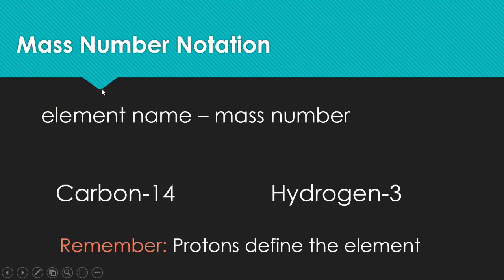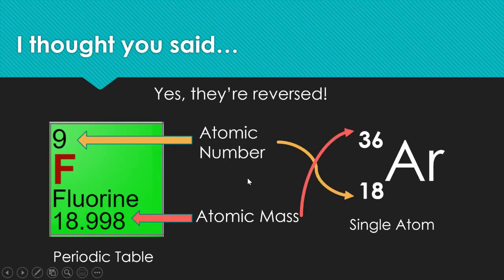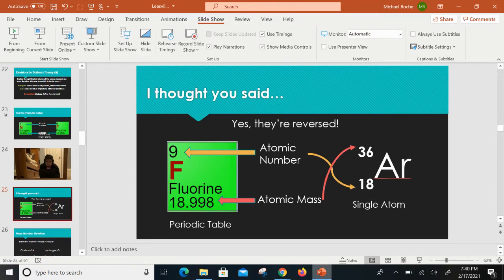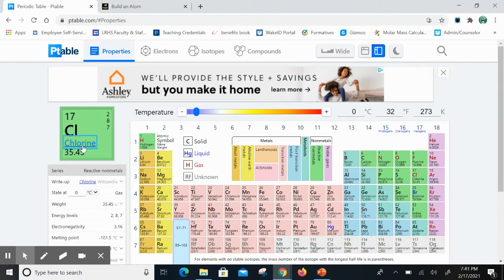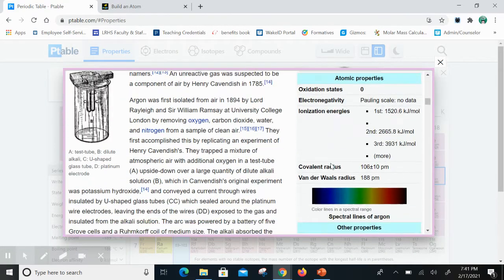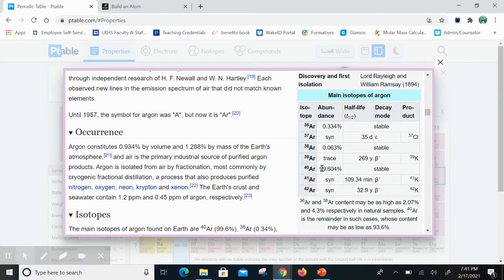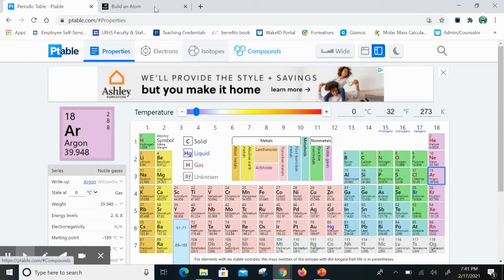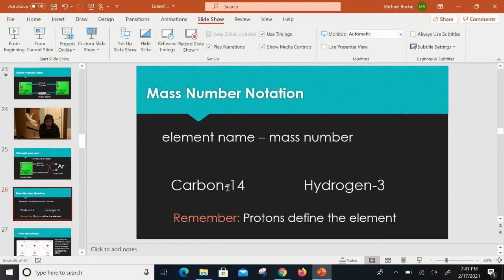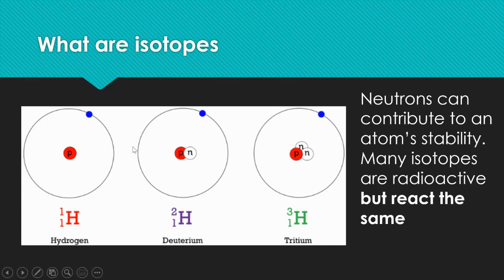There's also mass number notation: you write the element name, a dash, and then the mass number — for example, Argon-40. This works because if you say 'argon,' you already know there are 18 protons by definition. Argon comes in many isotopes with different numbers of neutrons, but they all have 18 protons. Similarly, saying 'carbon' already tells you there are six protons, so just adding the mass number gives you all the information.